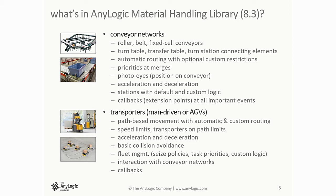The other thing in this release is transporters. We implemented part of what we plan for material handling — transporters move along predefined lines, so they also move in a network. There is automatic routing, collision avoidance, speed limits, acceleration, and deceleration. We have fleet management options like seize policies, seize nearest, task priorities, and you can customize everything including AGV or transporter routing.